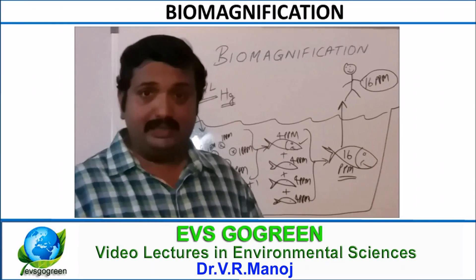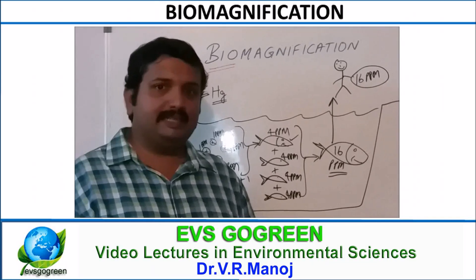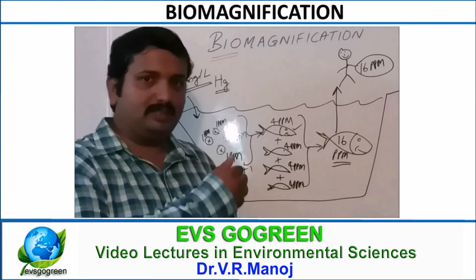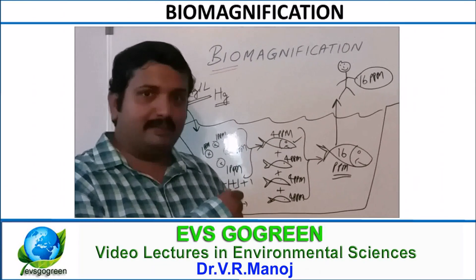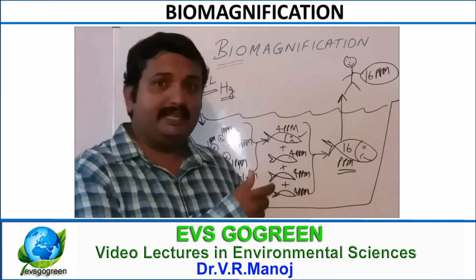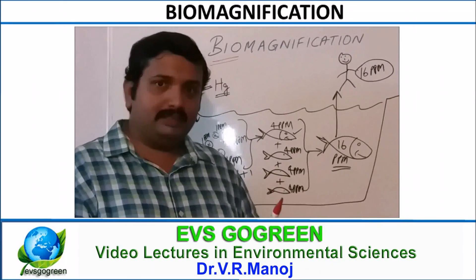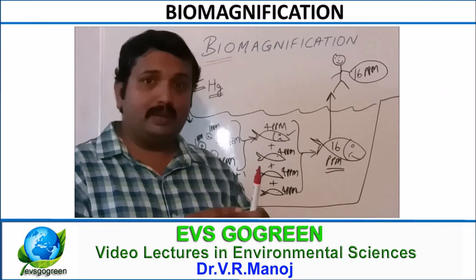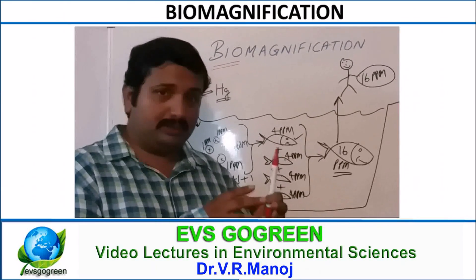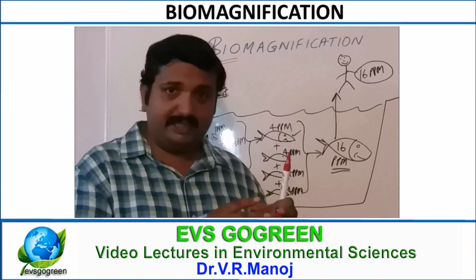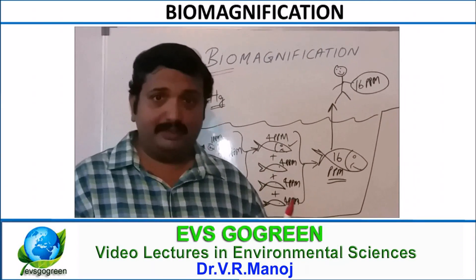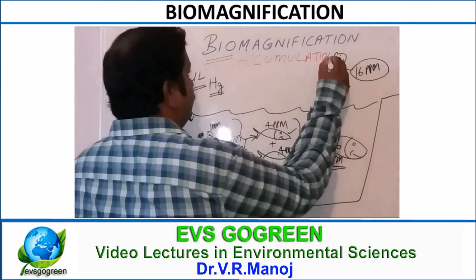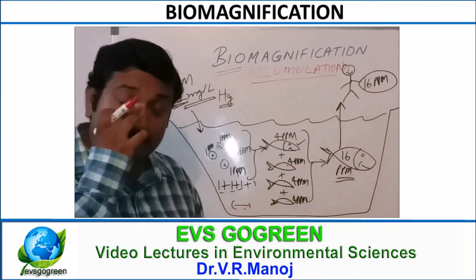Biomagnification generally occurs when the magnification process takes place through the food chain, or through the trophic levels, from one trophic level to another. At each trophic level, the concentration of the pollutant keeps on increasing. Now if that pollutant concentration increases in only one trophic level and stays there — gets accumulated — then that process is called bioaccumulation, and not biomagnification.